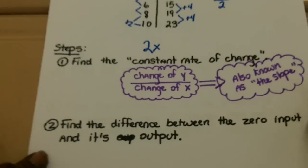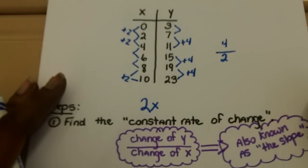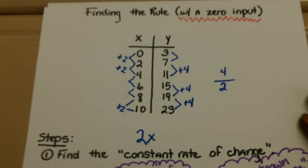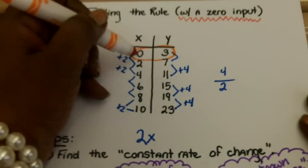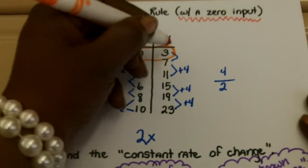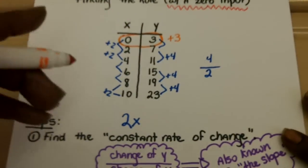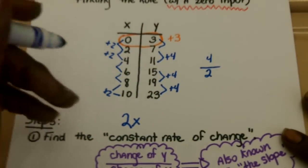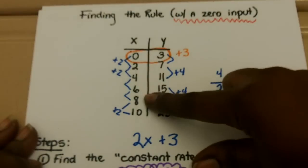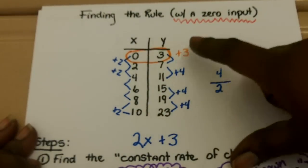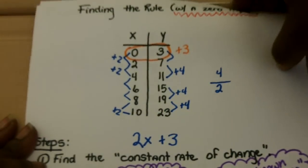Step 2 is to find the difference between the 0 input and its output. So you're going to go back to the chart. Now what we're looking for is the input of 0, which is the first one, and its output, which is 3. Obviously, the difference between 3 and 0 is that it increased by 3, or plus 3, because 0 plus 3 is 3. Therefore, the remainder of our rule would be plus 3. So what this means is that if you plug in any of these inputs into this expression, you will get its appropriate output. And you can test a point to see if that works.